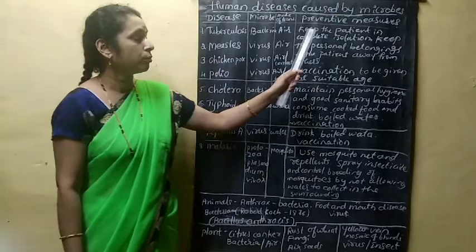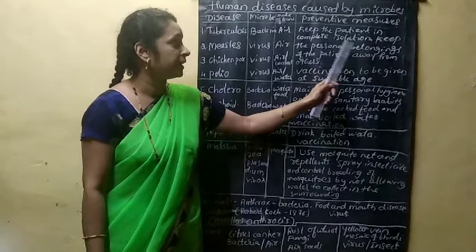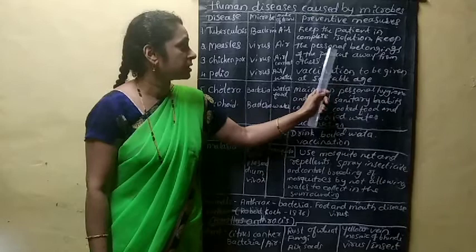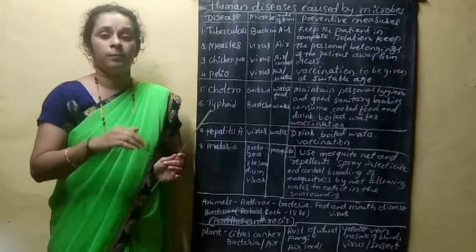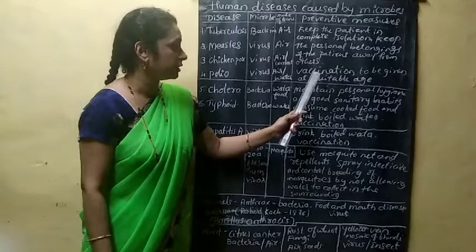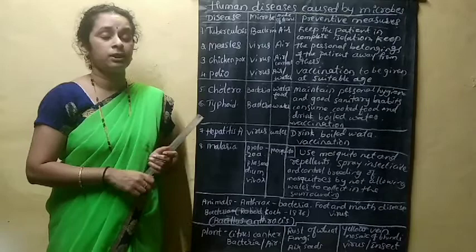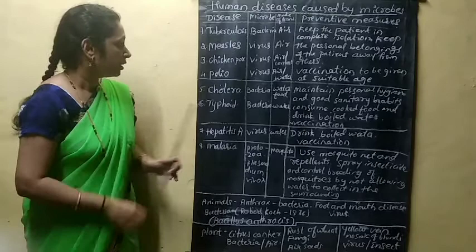How can you prevent these diseases — tuberculosis, measles, chicken pox, and polio? Keep the patient in complete isolation. Keep the personal belongings of the patient away from others. Vaccination should be given at a suitable age.